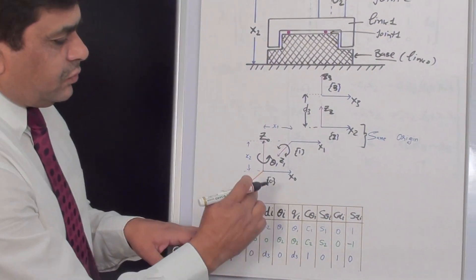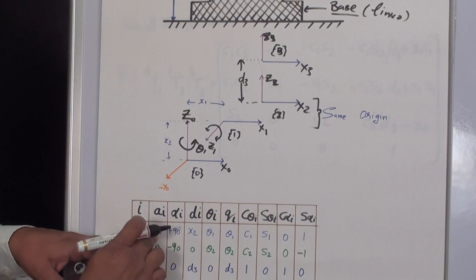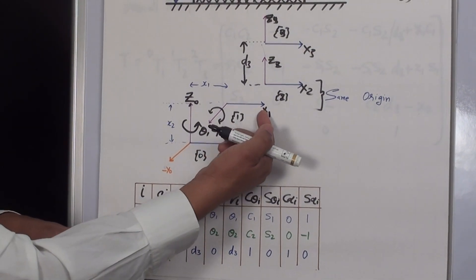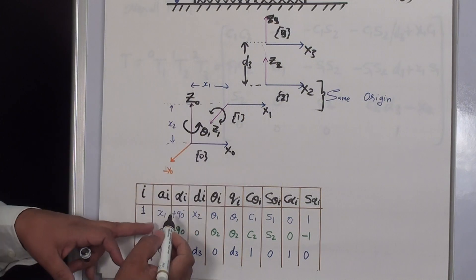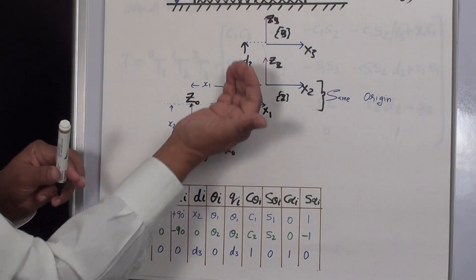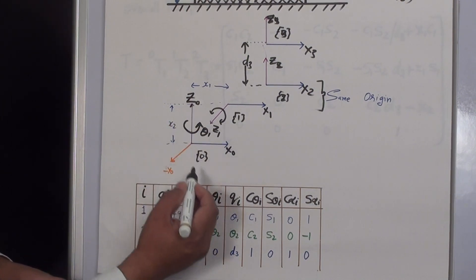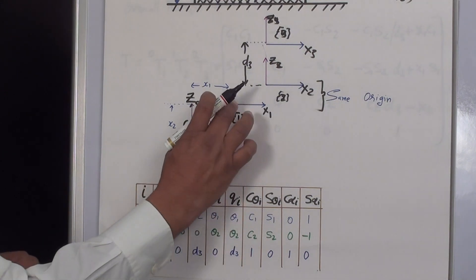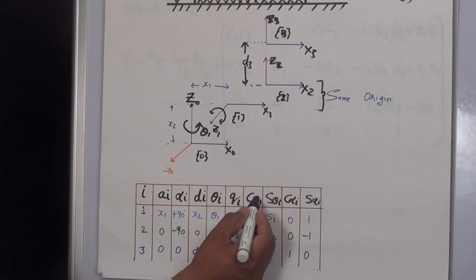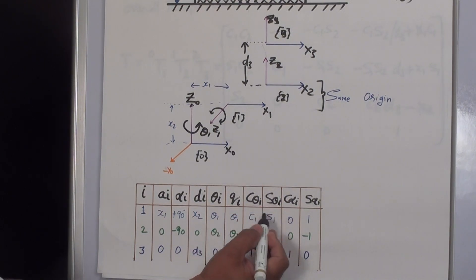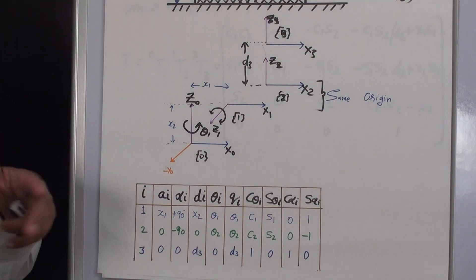Clearly identifying the definition of ai and comparing the frames, this length equals x1. Alpha i is the angle measured about the x-axis in a right-hand sense with respect to zi and z0. It is positive 90 degrees because the z-axis is rotated in this direction. di is the offset distance x2, and theta one is the variable for link one. We write cosine of theta one and sine of theta one by putting in these values. This first row defines the parameters required for kinematic analysis.